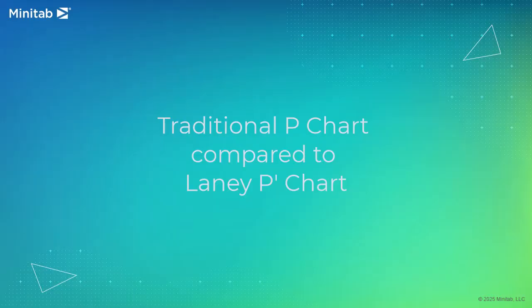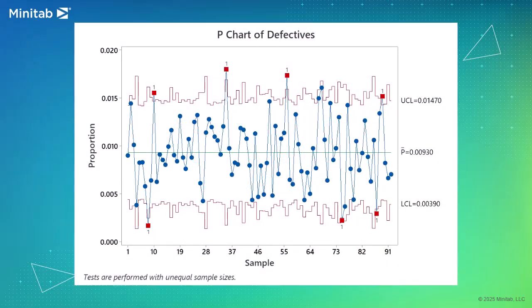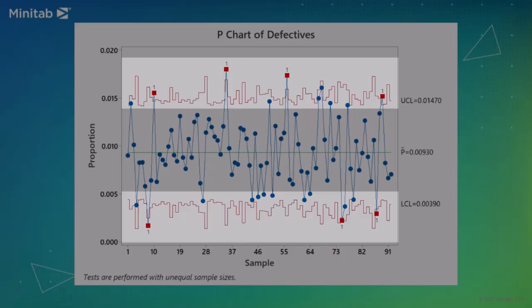Let's look at a traditional P-Chart compared to a Laney P-Prime chart of the same data. On this traditional P-Chart, the large subgroup sizes result in very narrow control limits. With the narrow control limits, overdispersion causes several of the subgroups to appear out of control.